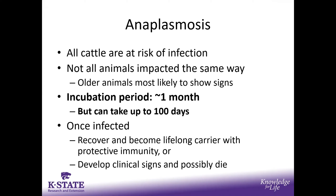Incubation — how long it takes from exposure to showing clinical signs — is about a month in general, though it can take up to 100 days. Think of it as replication: a very small amount of organism is introduced, then it divides into a much larger amount that causes disease. If you routinely see clinical signs in late summer, the animals were likely exposed about a month prior. Keep that in mind as a good working understanding.